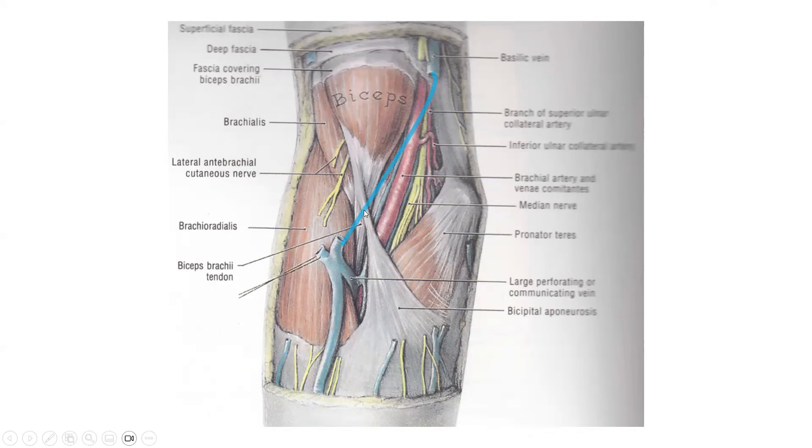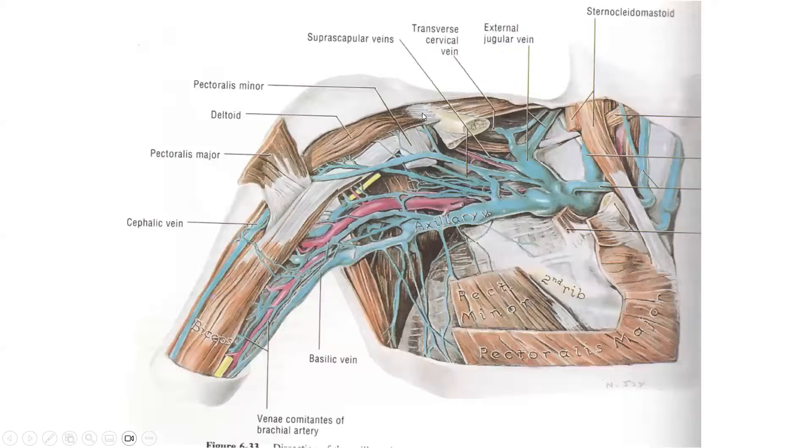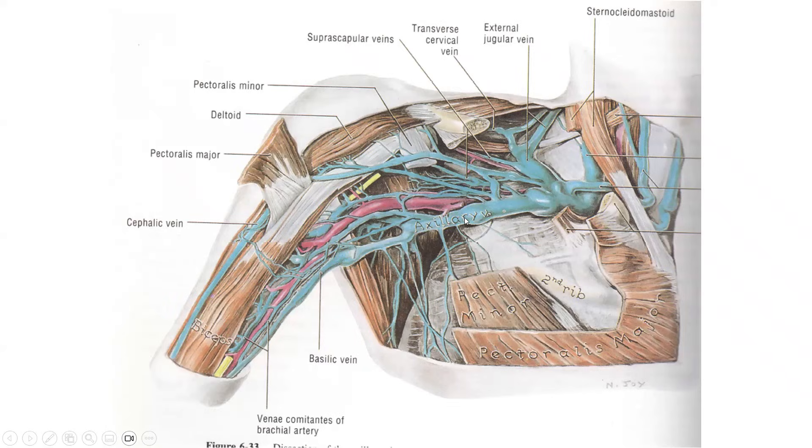And when I advance this one through the basilic vein, I usually advance it under fluoro with the balloon deflated initially because the vein is not large enough to accommodate an inflated balloon. And once I reach the axillary vein, this is when I inflate the balloon.